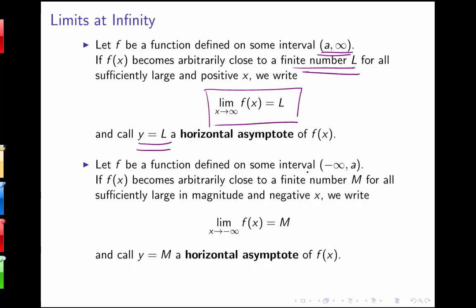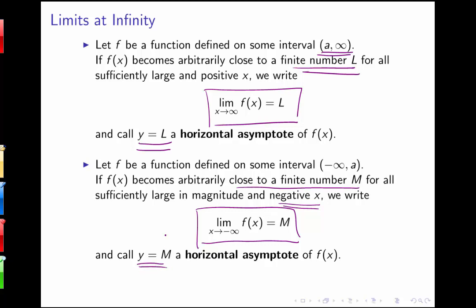Similarly, if we have a function defined on an interval from negative infinity up to some number a — or defined on all real numbers — and the function becomes arbitrarily close to some finite number m for all sufficiently large x that are negative, we say the limit as x goes to negative infinity of the function equals m, and we call y = m a horizontal asymptote.